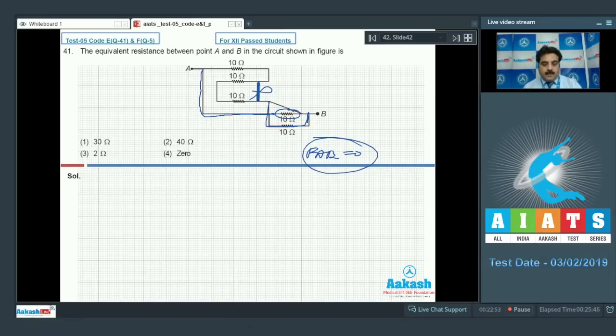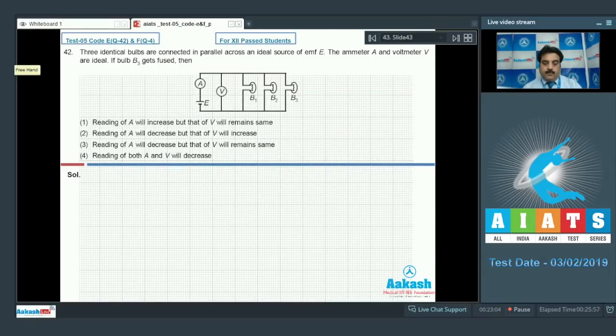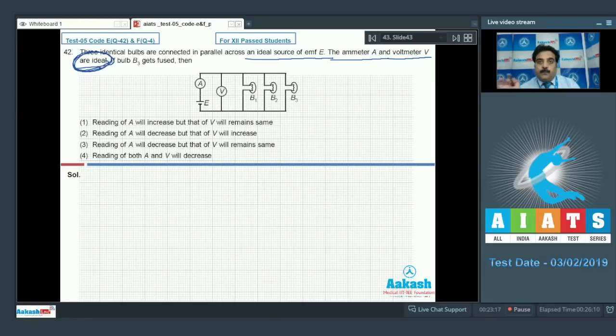Option number 4 is correct. Question number 42: three identical bulbs are connected in parallel across an ideal source of EMF E. Ammeter A and voltmeter B are ideal, meaning V equals E. Bulb B3 gets fused. Let the resistance of each bulb be